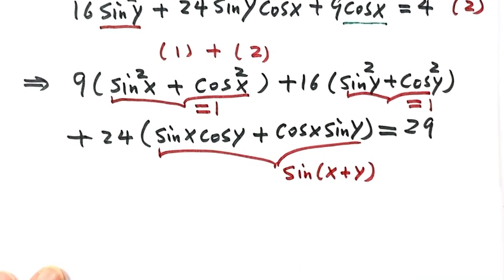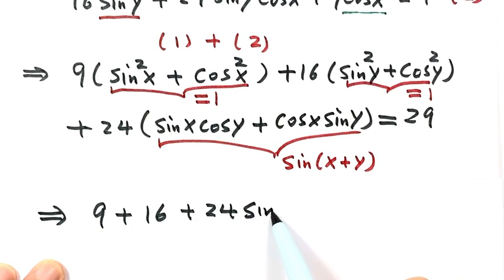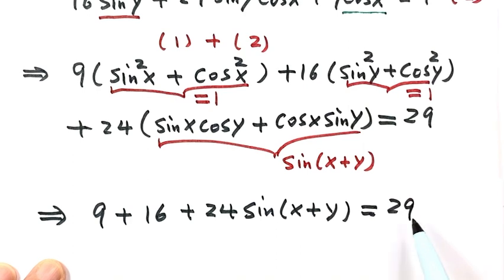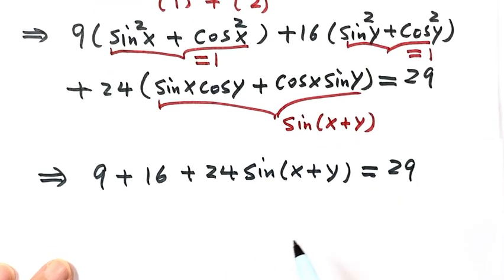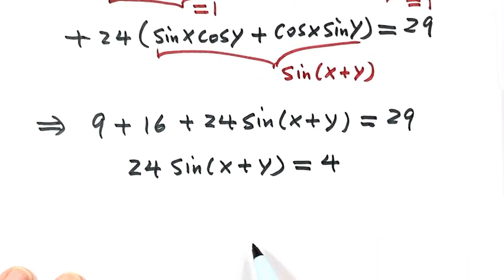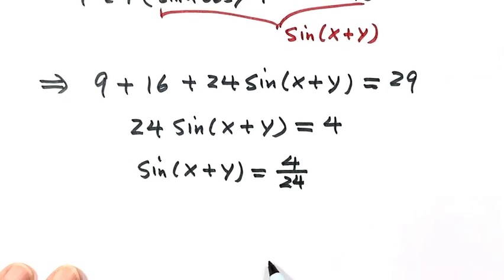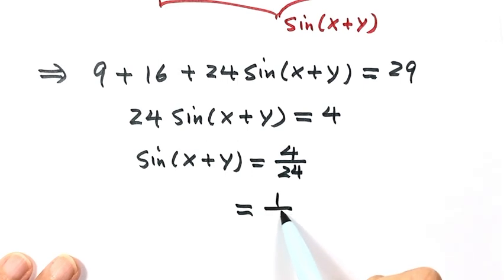Now let's simplify. We have 9 plus 16 plus 24 sin(x plus y) equals 29. Moving the constant to the right-hand side: 24 sin(x plus y) equals 4. Therefore, sin(x plus y) equals 4 over 24, which simplifies to 1 over 6. So 1/6 is the answer for this question.